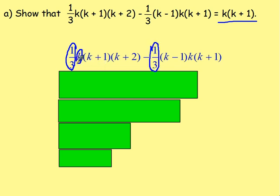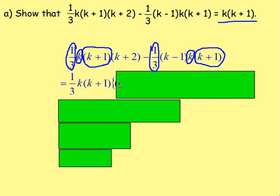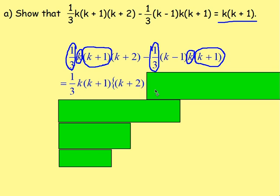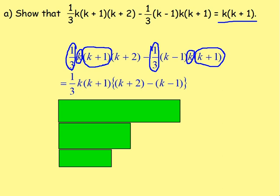We can also take out k — k is also a common factor. And we can also take out (k+1) — (k+1) is also a common factor. So let's take out the one third, the k, and the (k+1). That means we are left with — using curly brackets since we already have normal brackets — we are left with (k+2) and then take away (k-1).